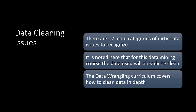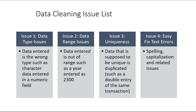Inaccurate and inconsistent data — there are basically 12 categories of dirty data that you should be able to recognize. The data wrangling course will cover how to actually do this. Issue one is data type, and that occurs when, for example, you ask people's age and mean for them to respond numerically, but some people write in the number as a word. You then have data incorrectly entered as character data in a numeric field.